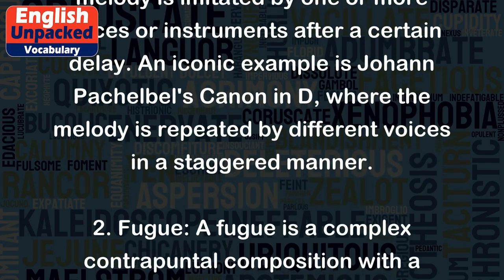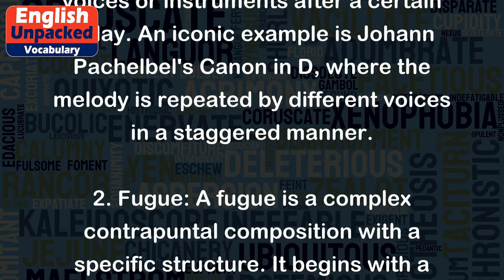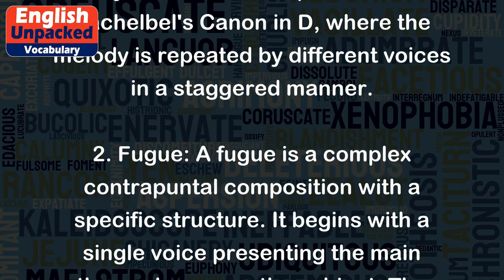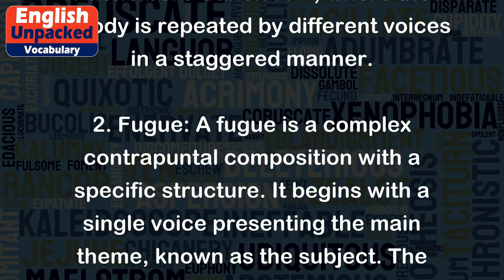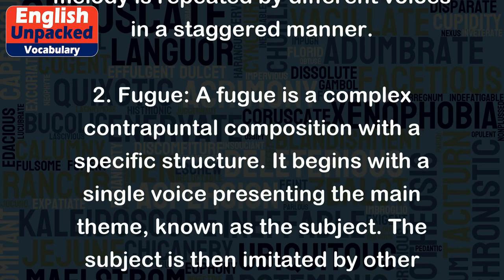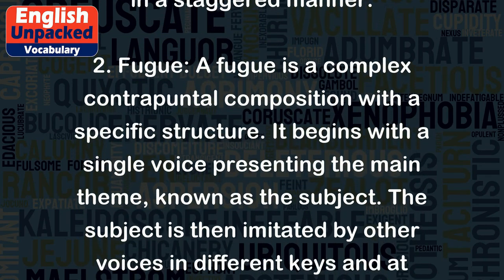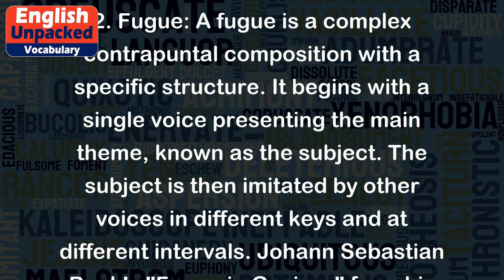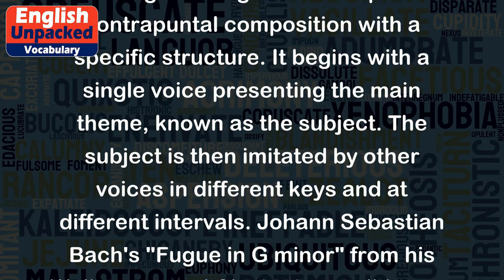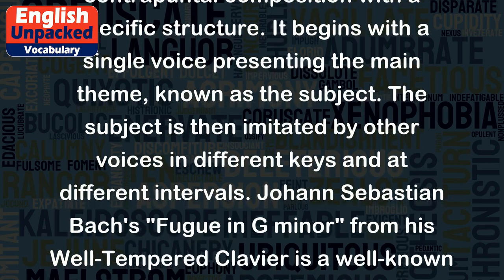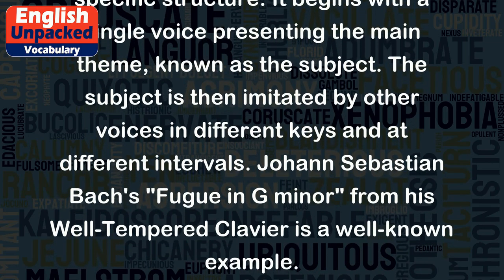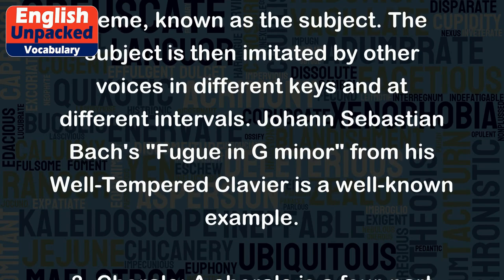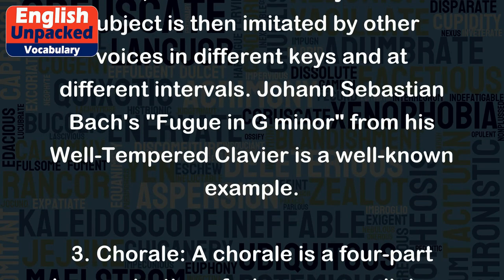Second, Fugue: a fugue is a complex contrapuntal composition with a specific structure. It begins with a single voice presenting the main theme, known as the subject. The subject is then imitated by other voices in different keys and at different intervals. Johann Sebastian Bach's Fugue in G minor from his Well-Tempered Clavier is a well-known example.